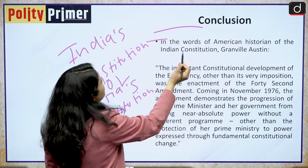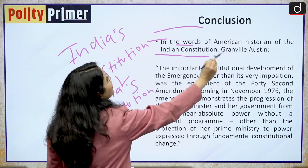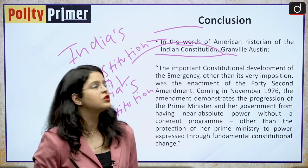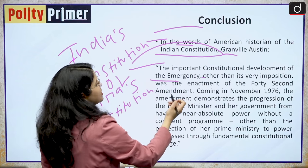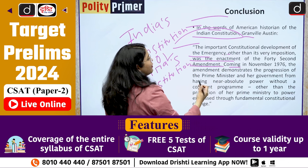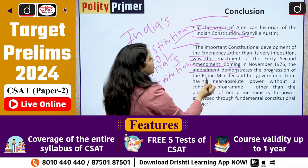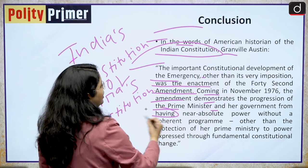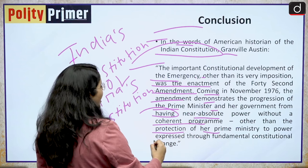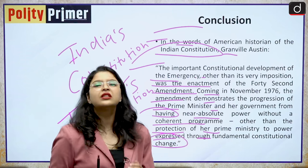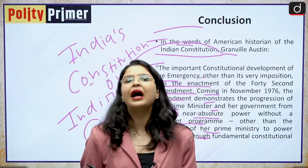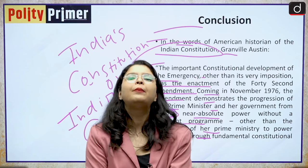In conclusion, I would like to mention the words of American historian of the Indian constitution, Granville Austin — a very established name in the field of constitutional law. He said: 'The important constitutional development of the emergency, other than its very imposition, was the enactment of the 42nd Amendment. Coming in November 1976, the amendment demonstrates the progression of the Prime Minister and her government from having near absolute power without a coherent program, other than the protection of the Prime Minister, to power expressed through fundamental constitutional change.' This constitutional amendment act truly taught us that power corrupts but absolute power corrupts absolutely.